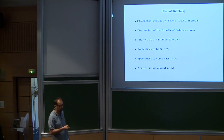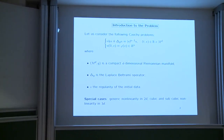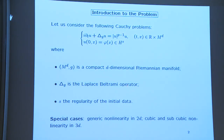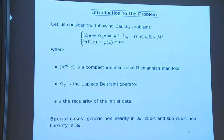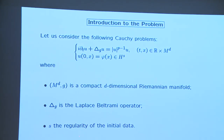The problem is the same as Gigliola described. For simplicity I assume a pure power nonlinearity, but the technique we use allows dealing with more general potentials — it's not completely clear to me that Bourgain's technology works for rougher nonlinear potentials. M_d is a d-dimensional compact manifold, delta_g is the Laplace-Beltrami operator, s is the regularity of the initial data, and you hope to propagate H^s regularity for every time and understand its growth.